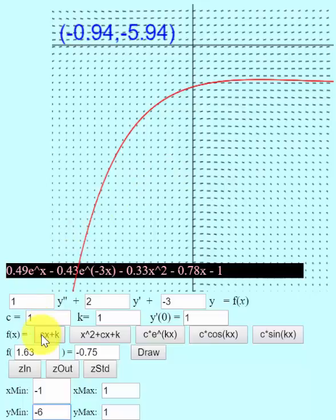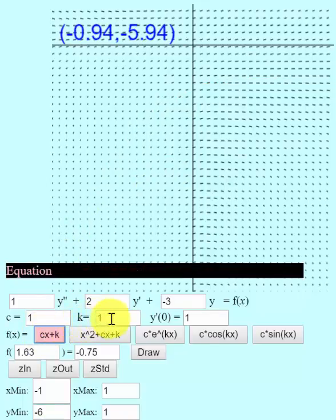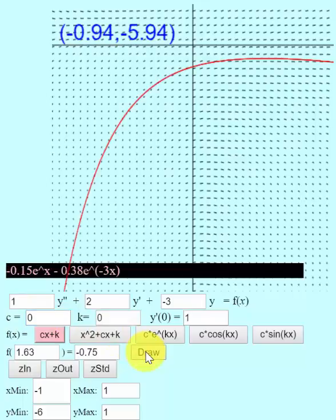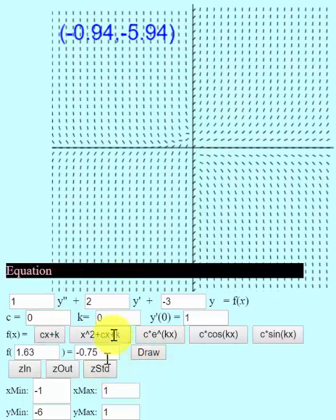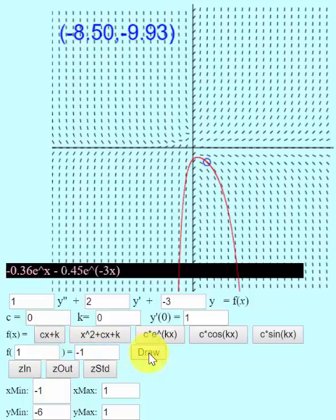And there's our solution with our new window here. If you want a homogeneous differential equation, then we want to go to the c x plus k. And if we set k equals 0 and c also equals 0, for example, then we'll get a homogeneous solution. Let's go z standard to get my standard window. And maybe we can say f of 1 equals negative 1. And I hit draw. And there's my solution to the homogeneous differential equation.